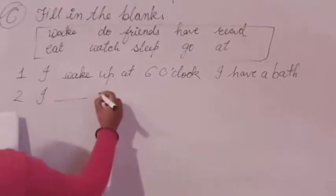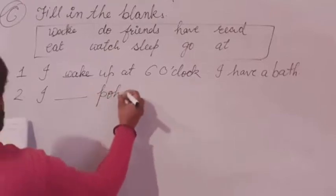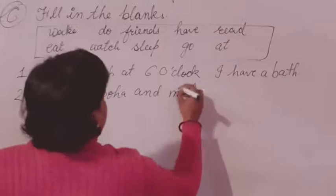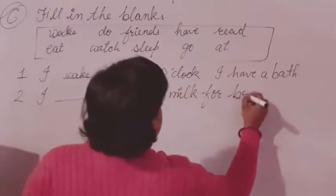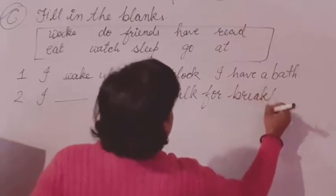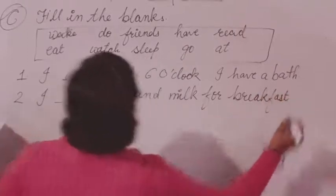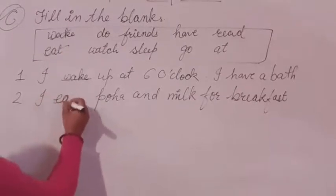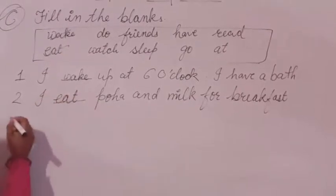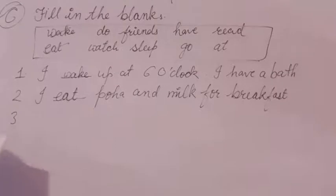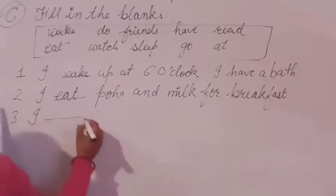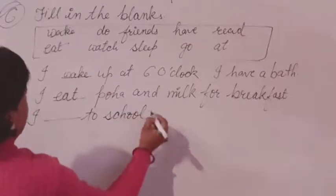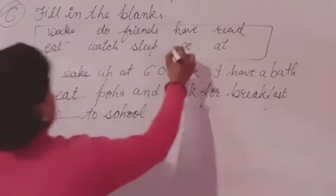I blank poha and milk for breakfast. This sentence is about a regular breakfast, so the correct word is 'eat.' I eat poha and milk for breakfast. Next: I blank to school — I go to school.